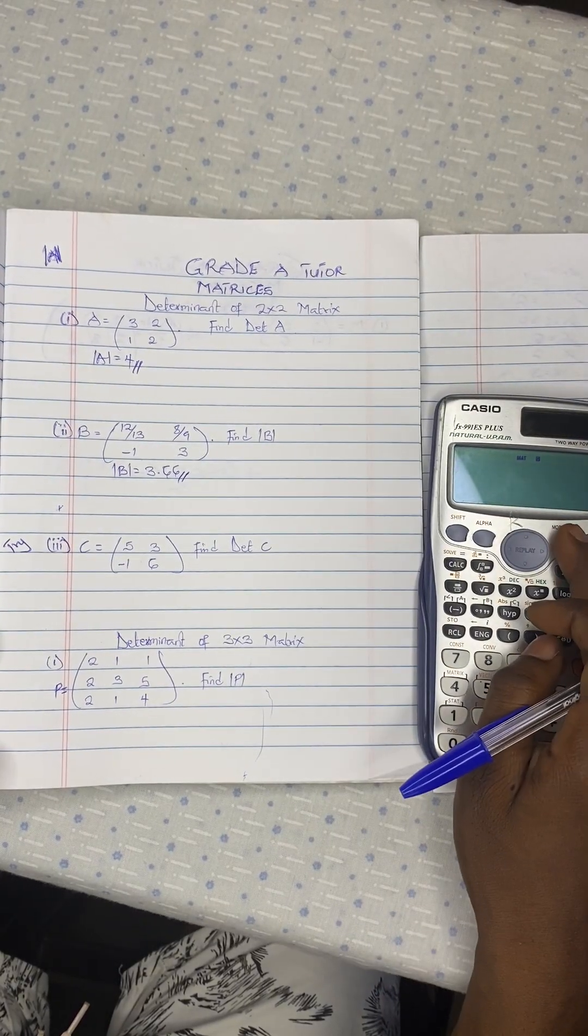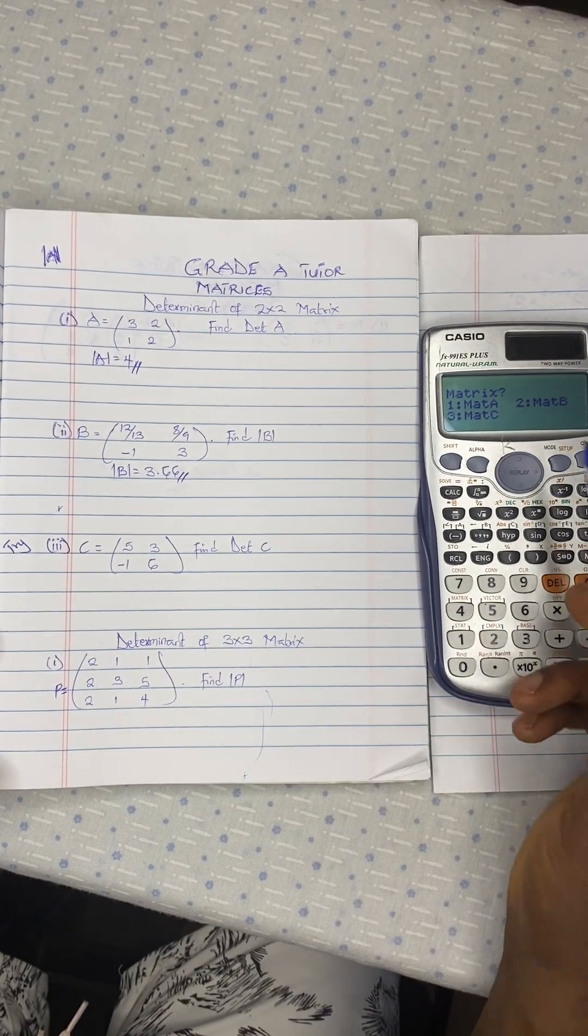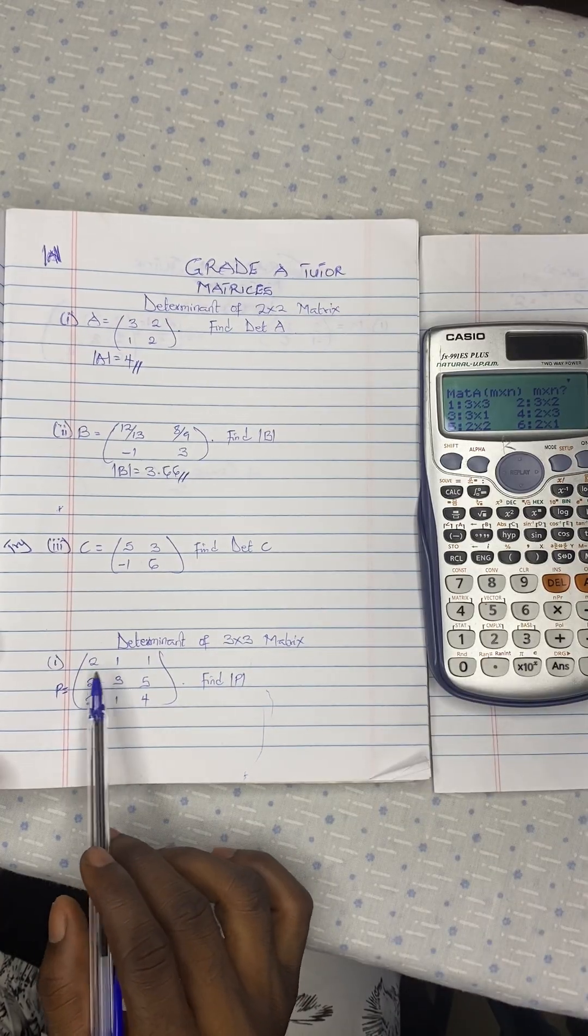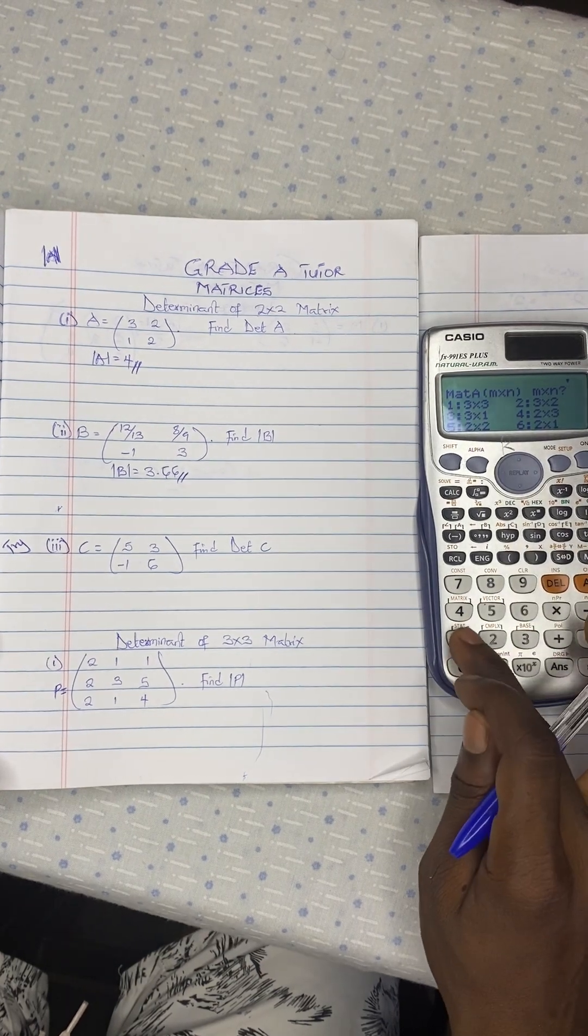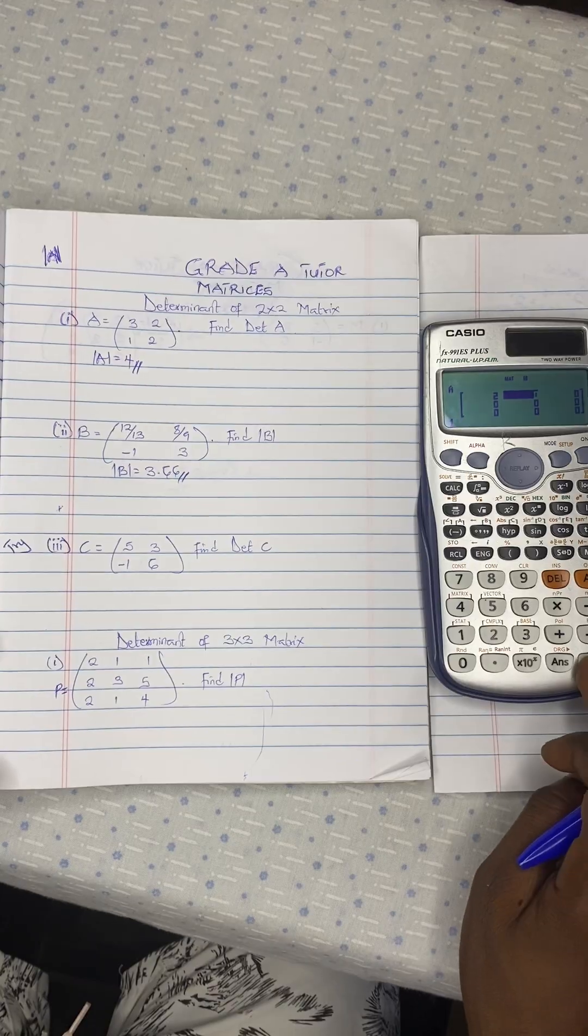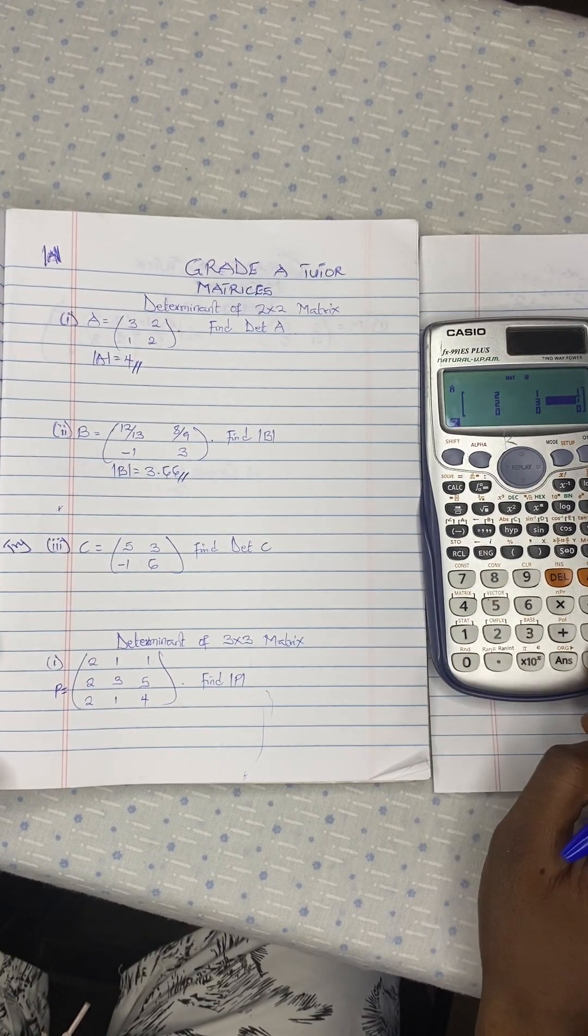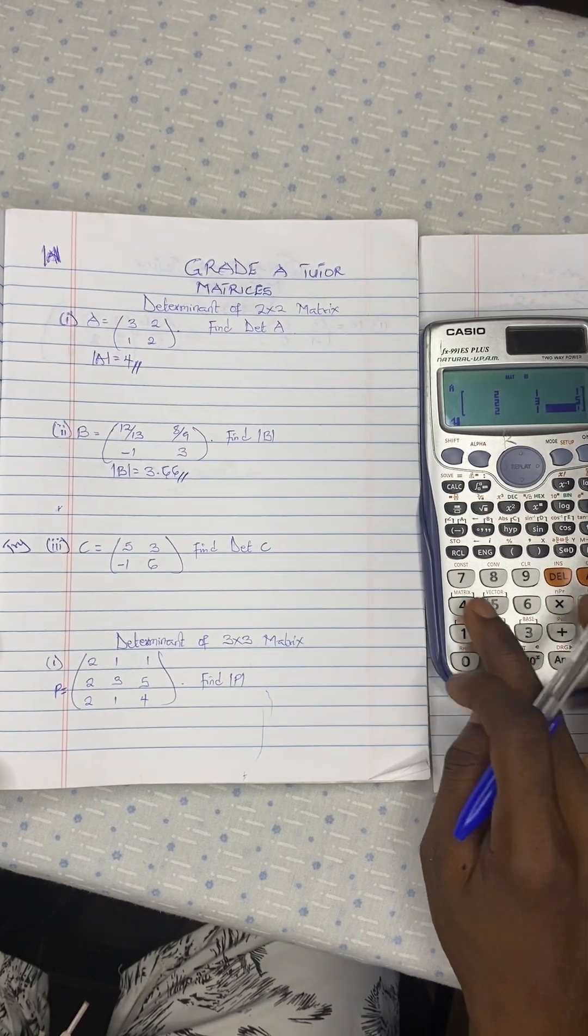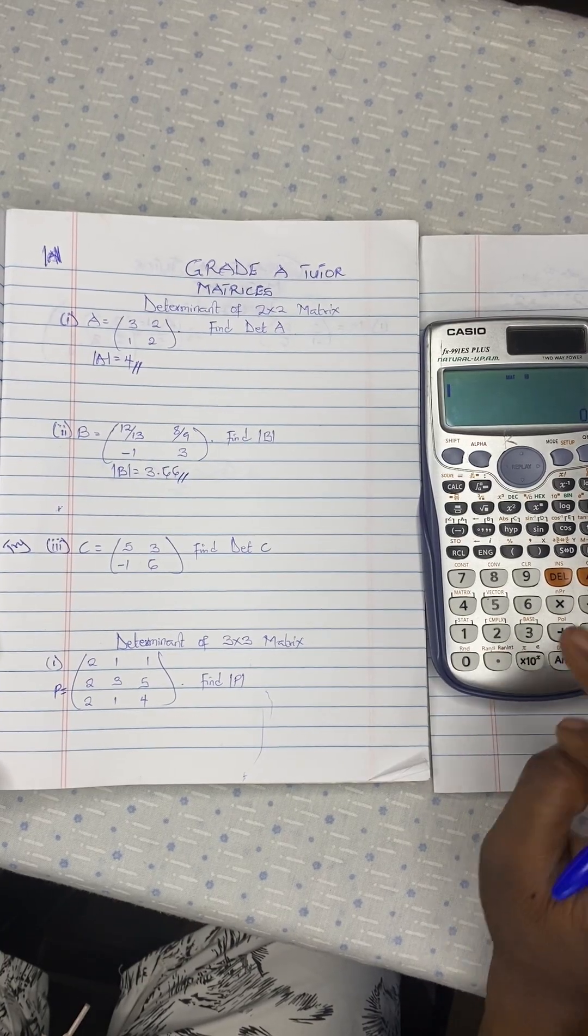So we press on mode option 6. Then we see 1. What are the dimensions? 3 by 3. And where is the 3 by 3? That is option 1. So you have 2, 1, 1, 2, 3, 5, 2, 1, 4. Okay. Then you press here to save it.